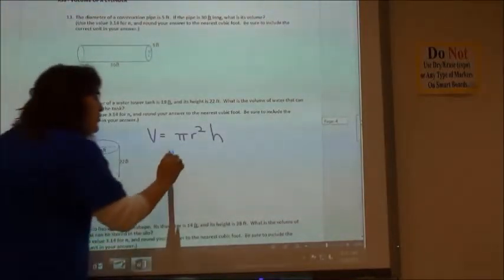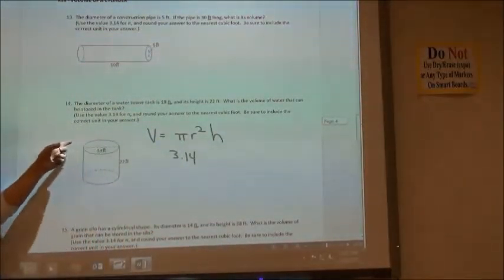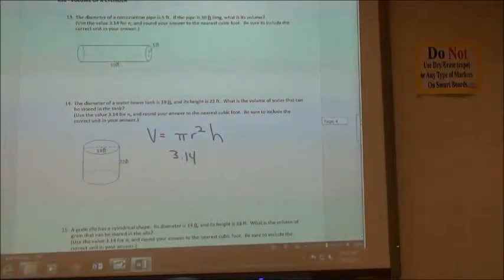Pi again, they're going to use 3.14. You have to be careful, sometimes they give you the radius, sometimes they give you the diameter. My line's all the way across, they gave me a diameter and I have to take half of that to find the radius.